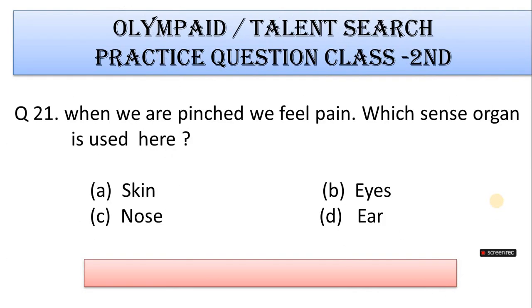Number 21: Which sense organ is used here? A. Skin, B. Eyes, C. Nose, D. Ear. Correct answer is Option A. Skin.